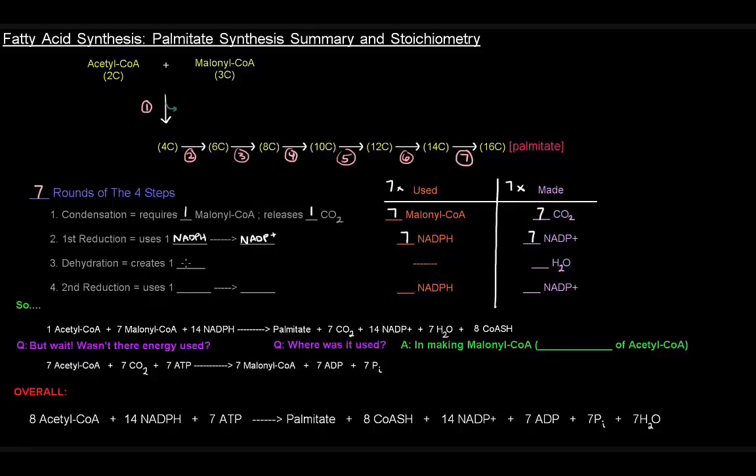Dehydration creates one water. That doesn't use anything up; it takes the H and the OH from the molecule, from the beta-hydroxyacyl ACP, so nothing else is used. Seven waters are created in seven rounds.